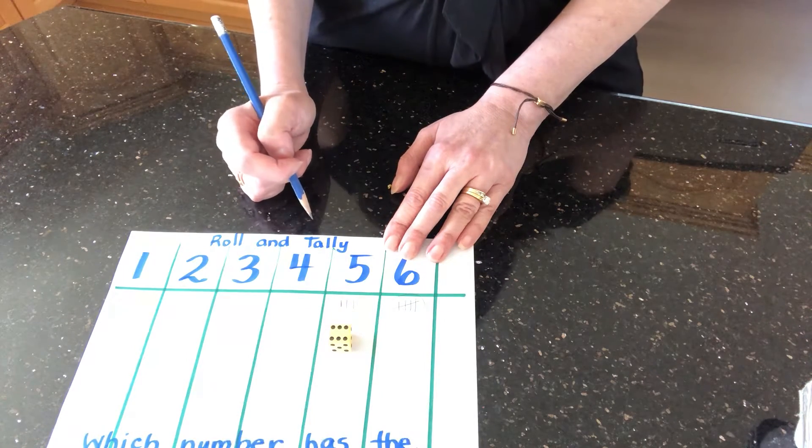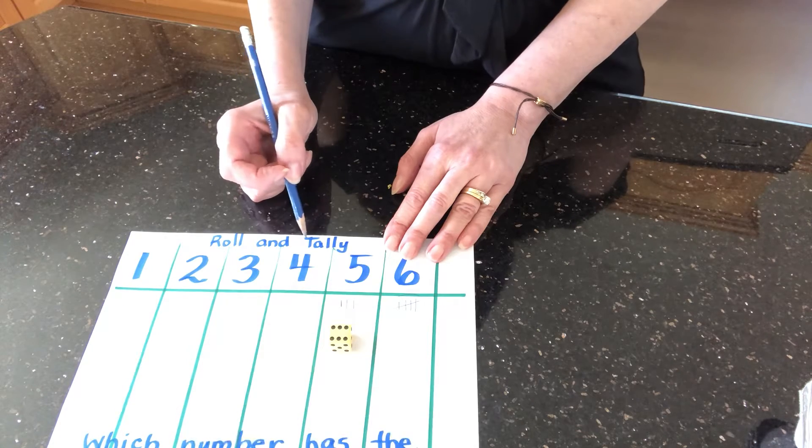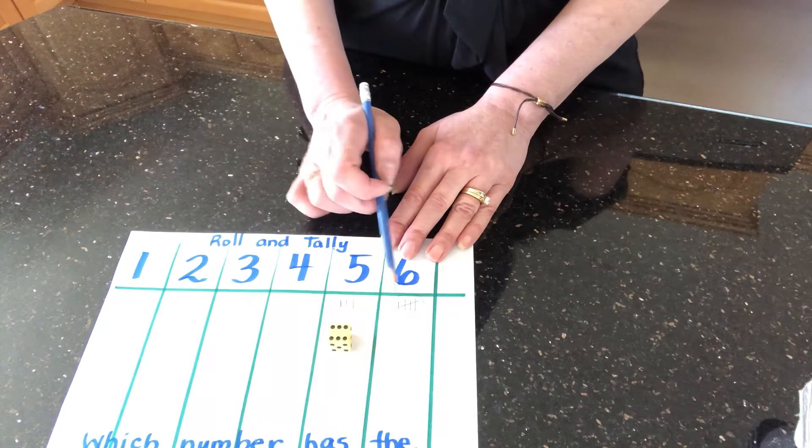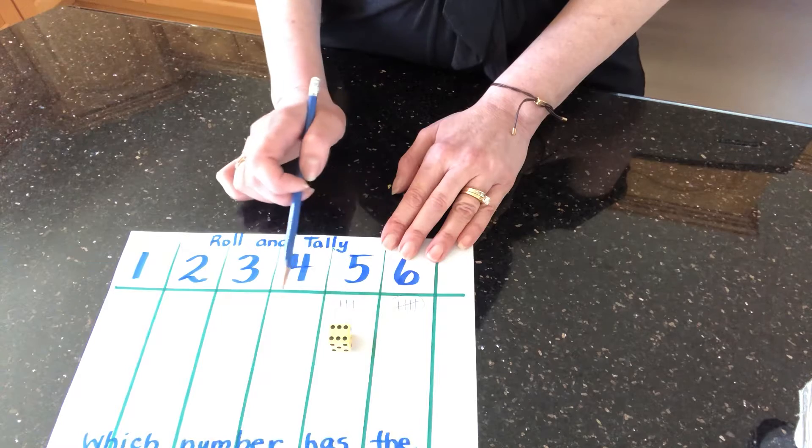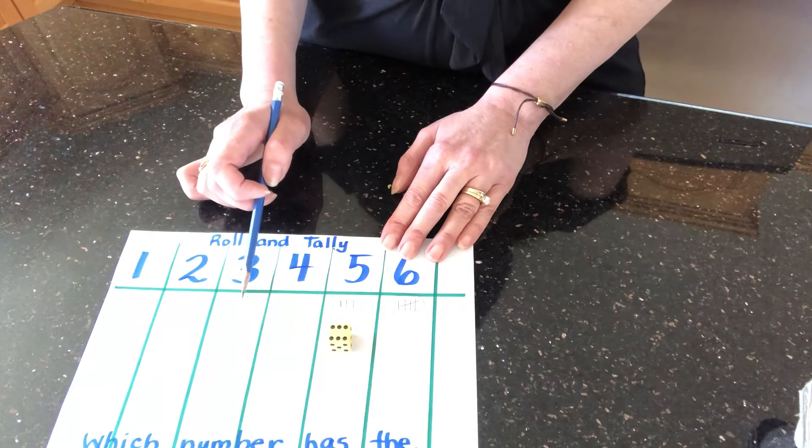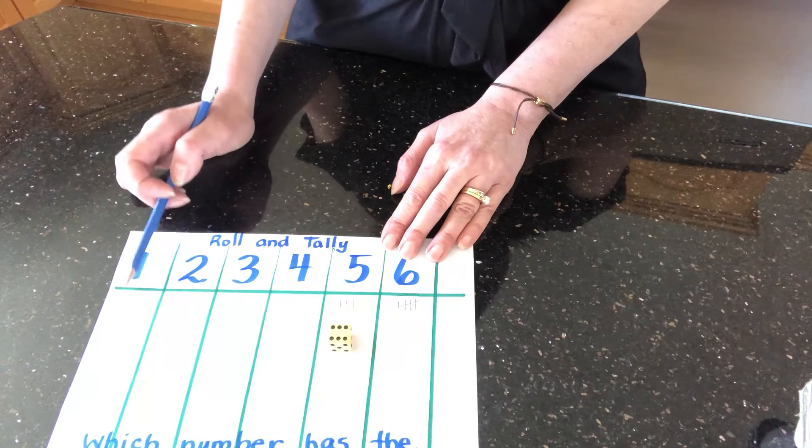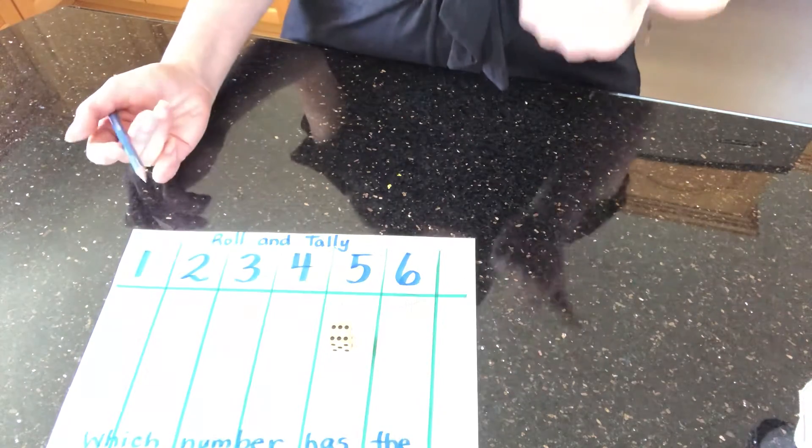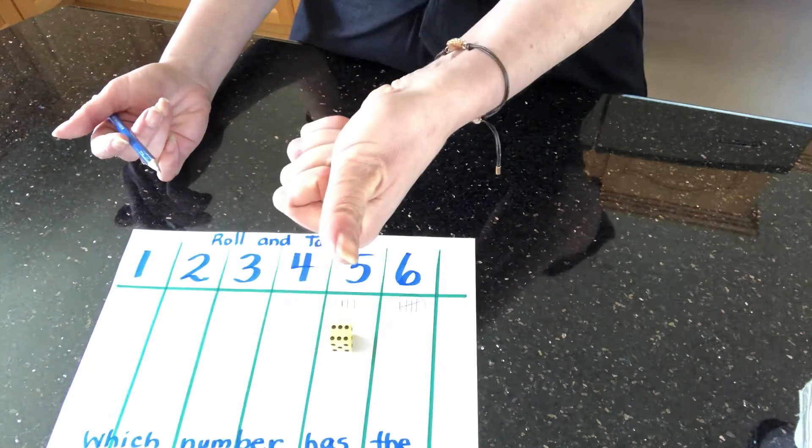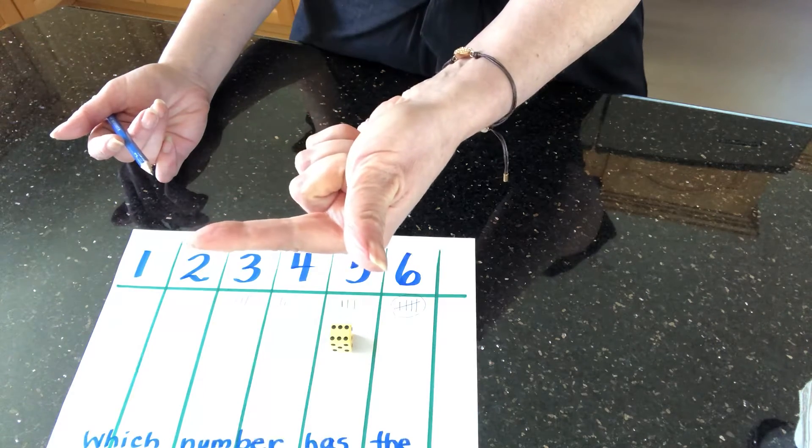How many more rolls do I need? Hmm, I have five here. Six, seven, eight, nine, ten, eleven, twelve, thirteen, fourteen, fifteen, sixteen, seventeen. Well, I'm going to keep seventeen in my head. Eighteen, nineteen, twenty.